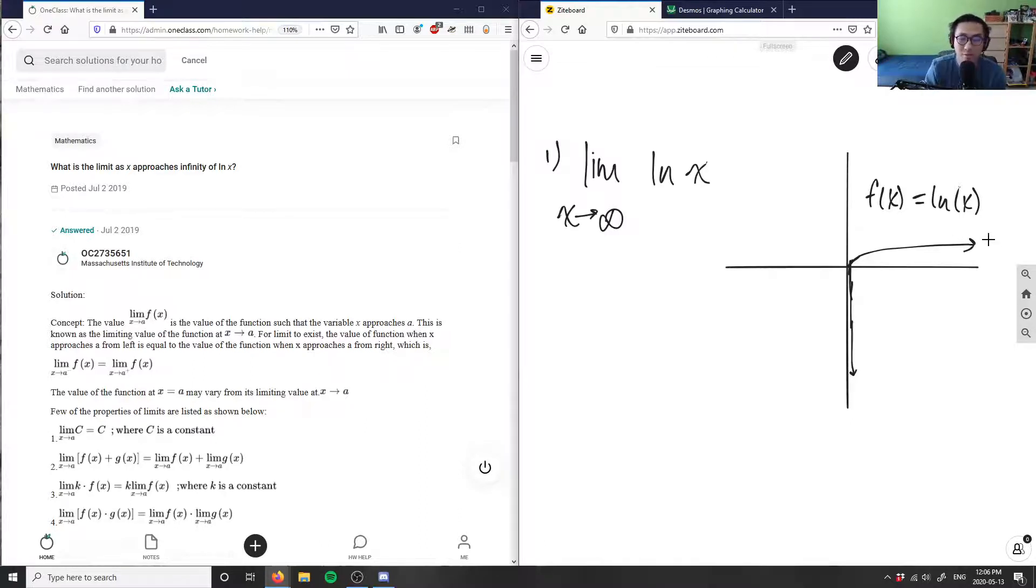If I use my calculator, we know ln(e) is 1. If you plug in ln of a hundred thousand or a very big number, you realize that the y value is going to increase at a very slow pace, but it will still increase.